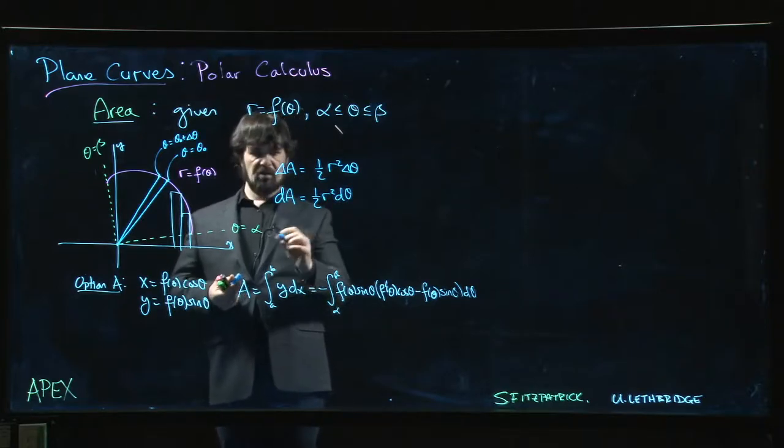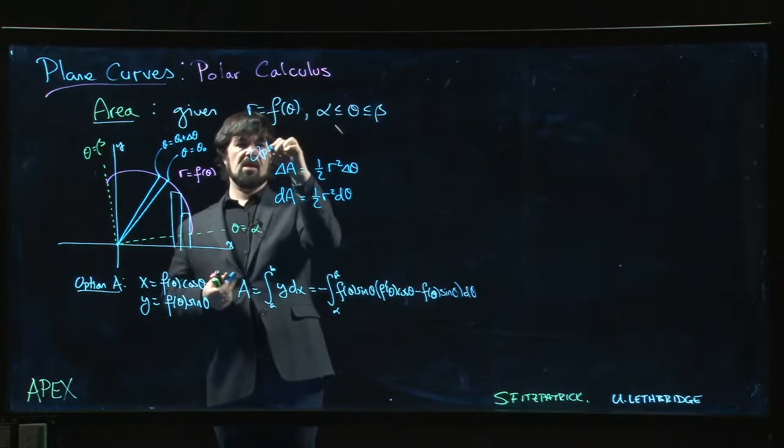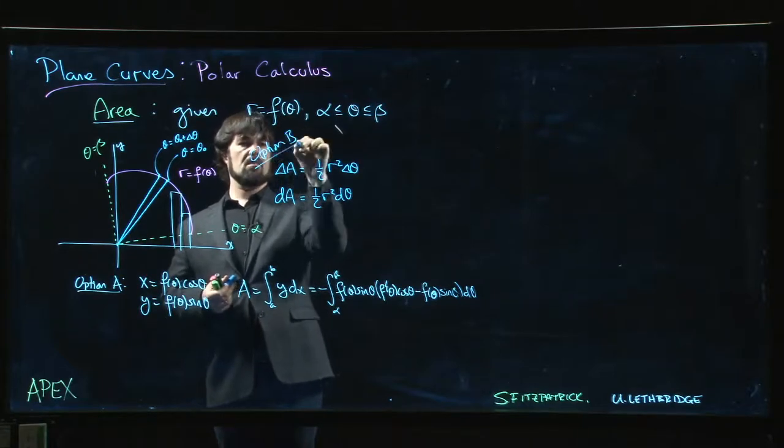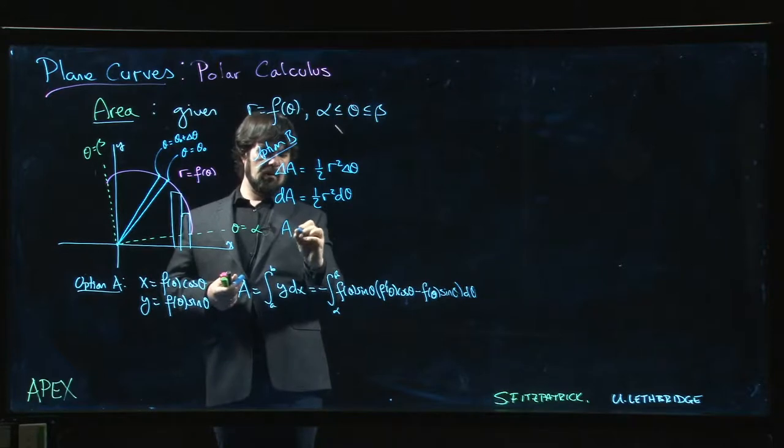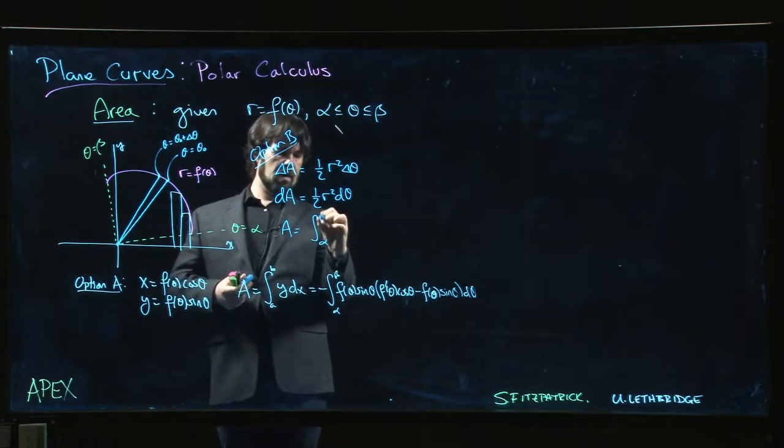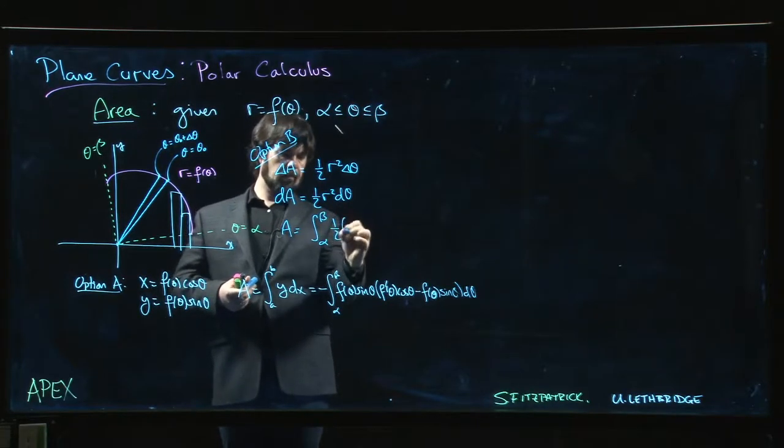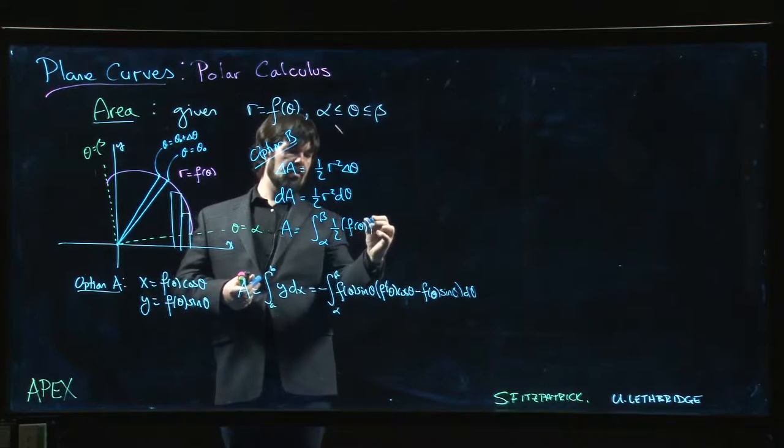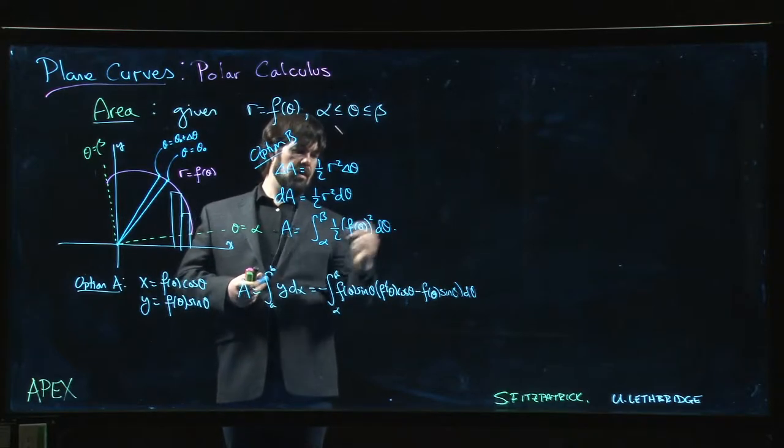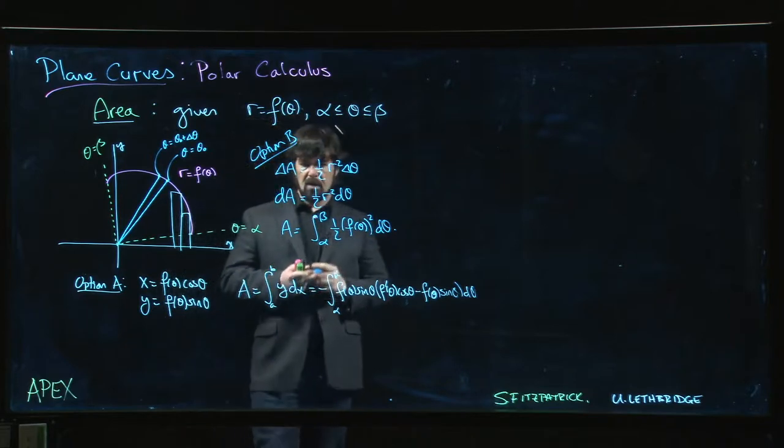Where of course r is just f of theta. So we get a much nicer formula, this is our option B. We get a much nicer formula for the area that's better adapted to polar coordinates: one-half f of theta squared times d theta. So that's the area formula that we're going to use.